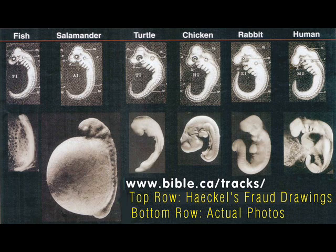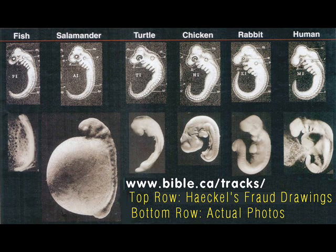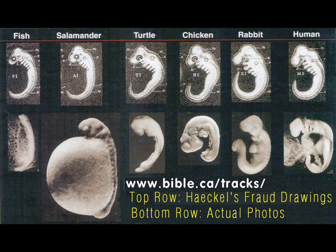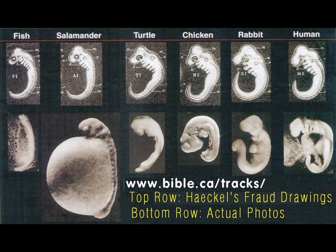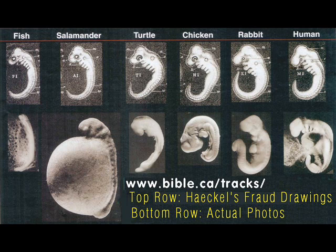If you look at them, Haeckel's drawings don't look exactly like the actual ones. For instance, he made them appear to be the same size, and he neglected the yolk sac on the salamander — small things like that. But in all truth, they don't really look that much different. You have to remember, Haeckel didn't have the imaging equipment we have nowadays. He would have had to take these embryos apart and look at them with his eyes and a handheld microscope. So his drawings aren't perfect, but it's not as if he maliciously faked them.